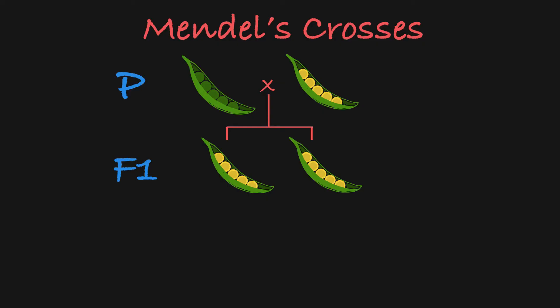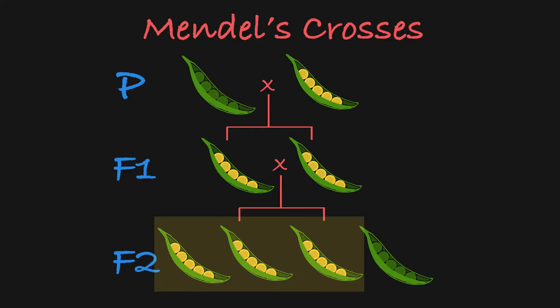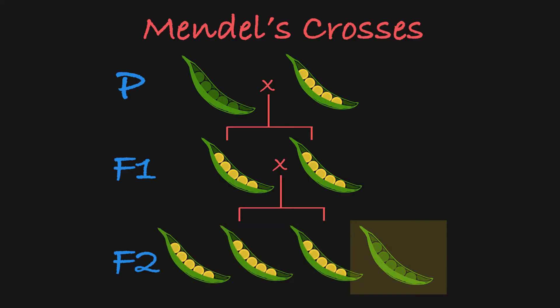Mendel then crossed the F1 plants together to create the F2 generation. In the F2 generation, Mendel observed that about three-quarters of the plants had yellow peas and one-quarter of the plants had green peas.